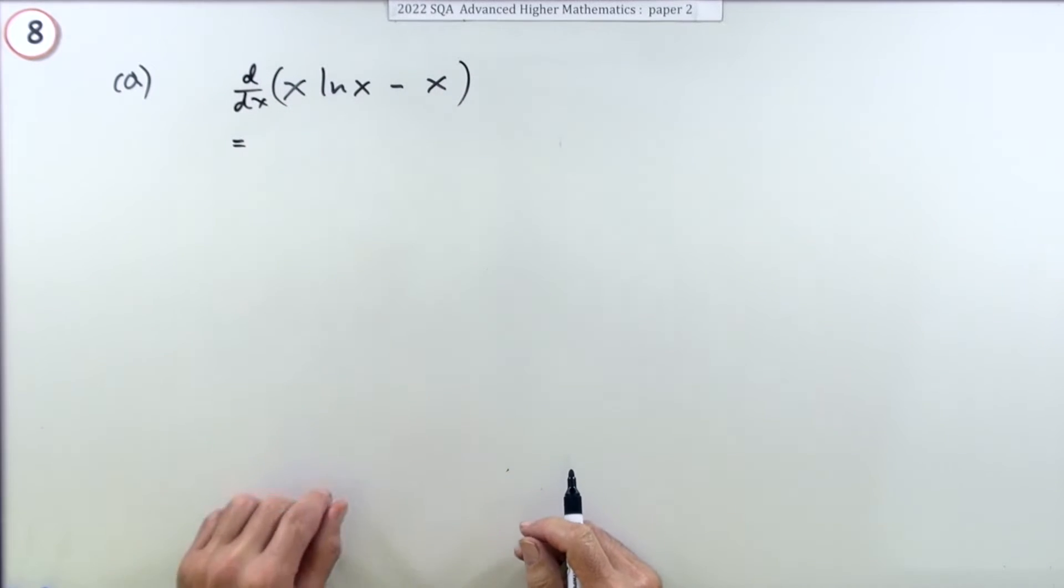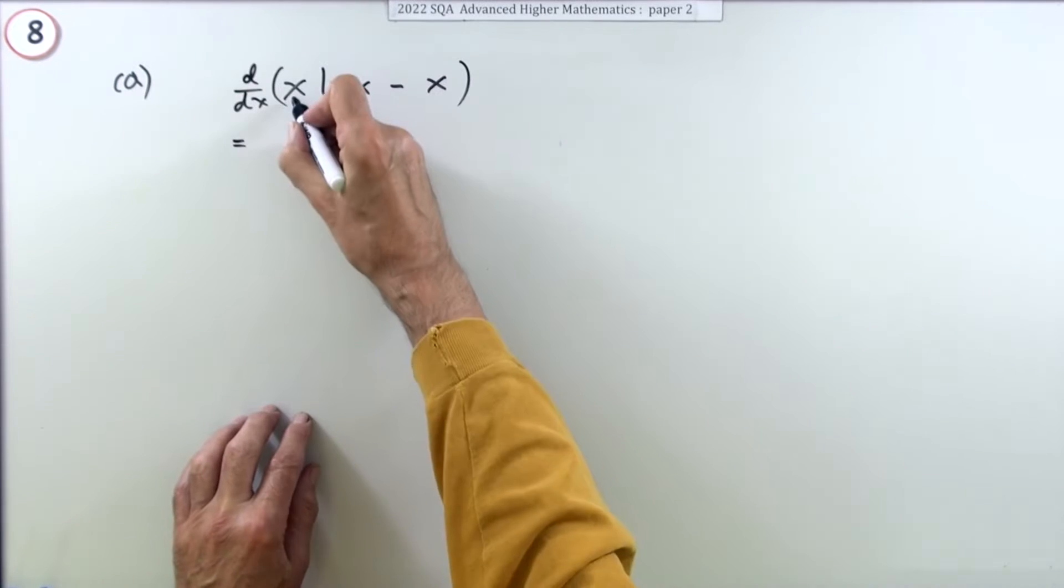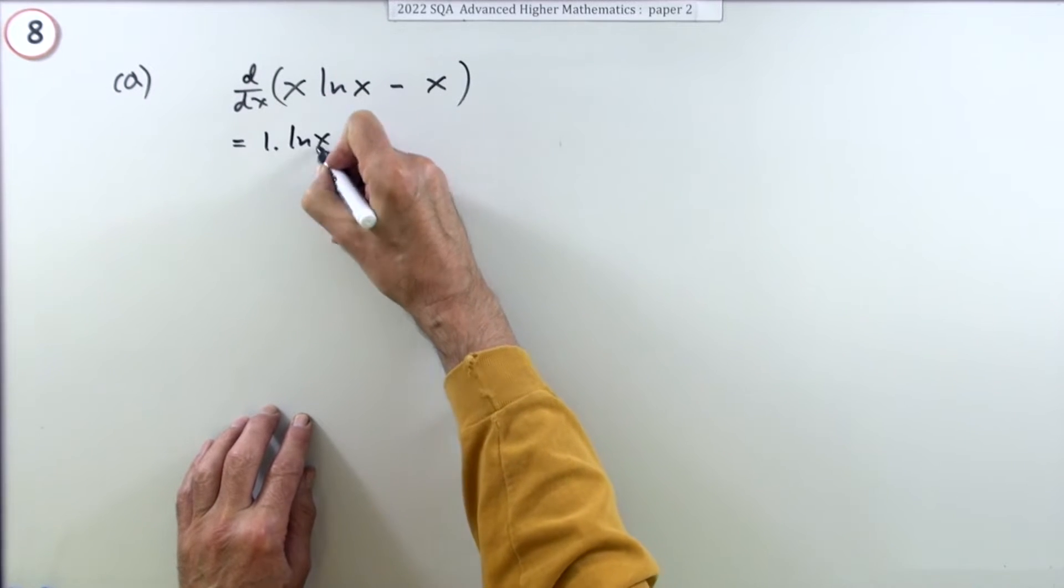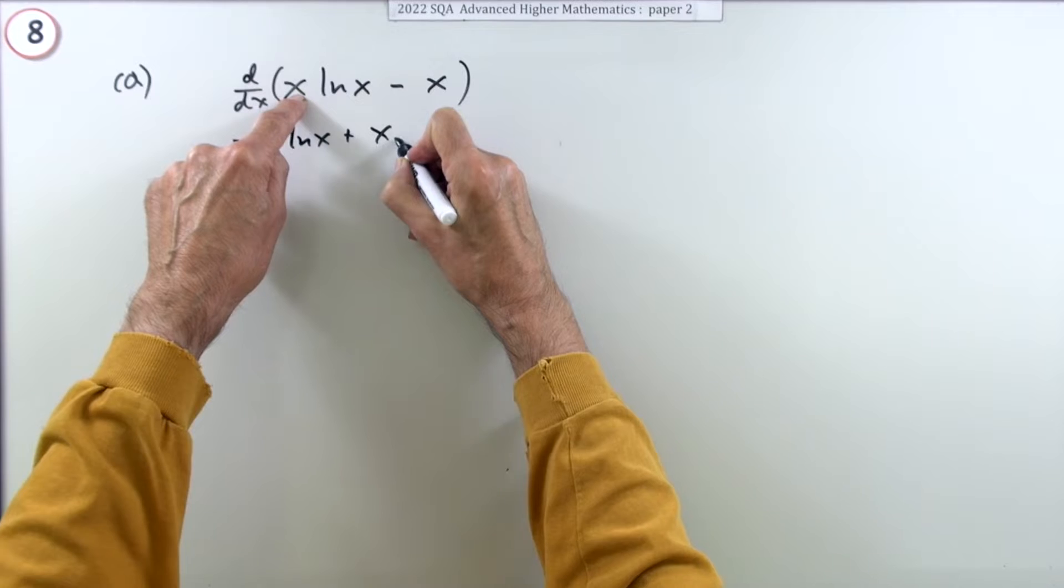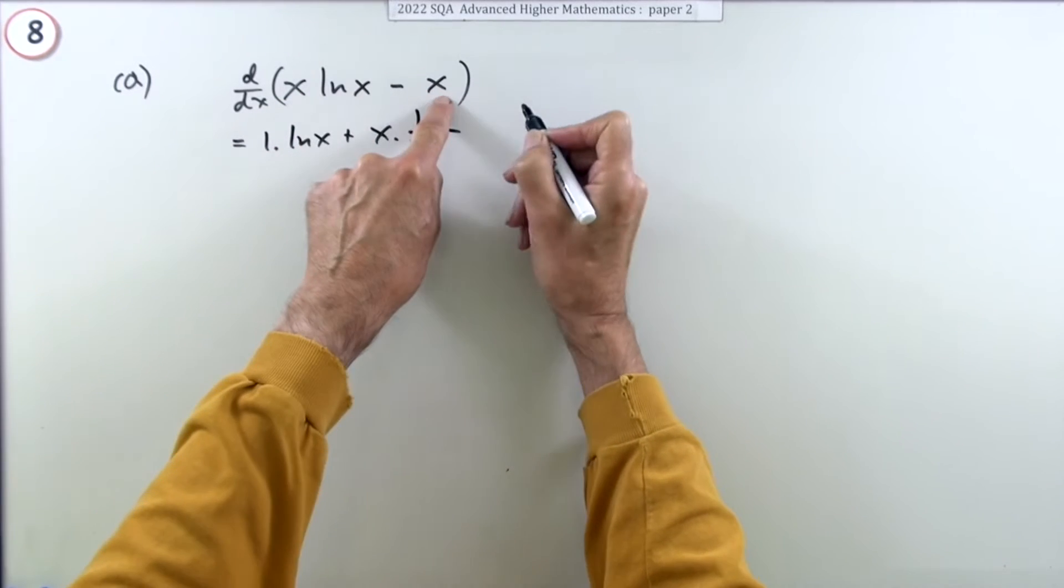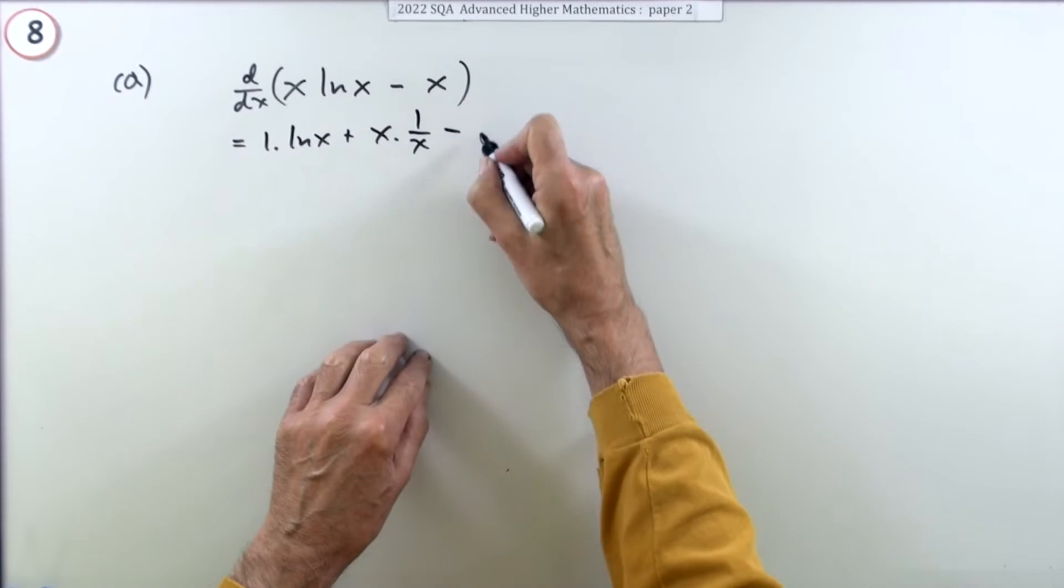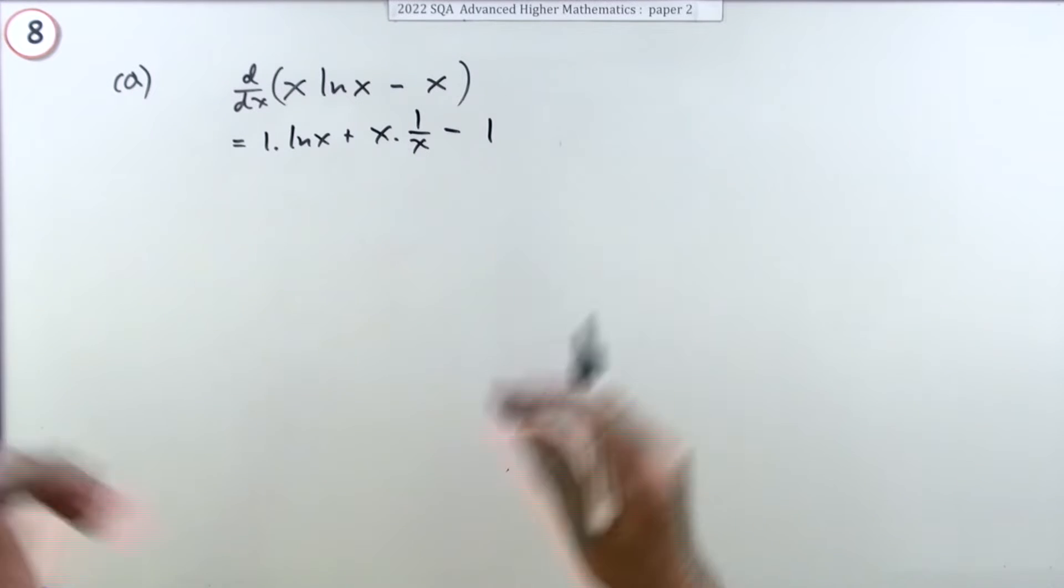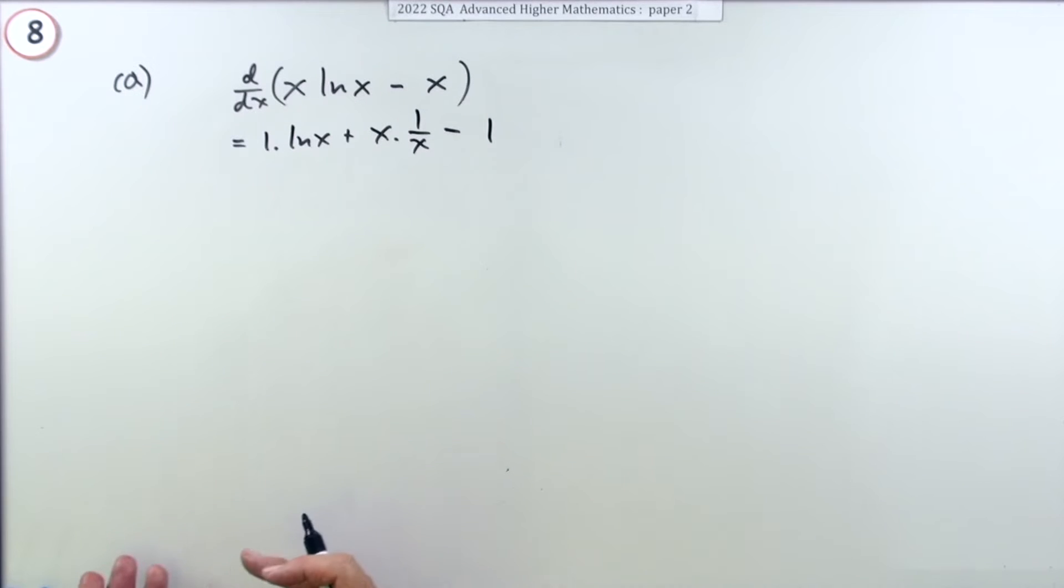Well if you want to differentiate that, you've got the product rule and a wee lonely term on its own. So using the product rule here, differentiate the x, that's a one, leave that alone. Now leave that alone and differentiate the ln(x), that just goes to one over x. Now differentiate the wee lone term x, just goes to one.